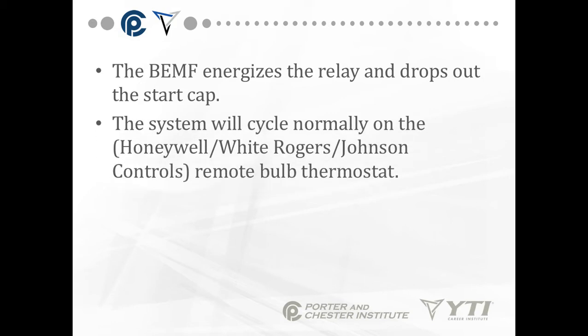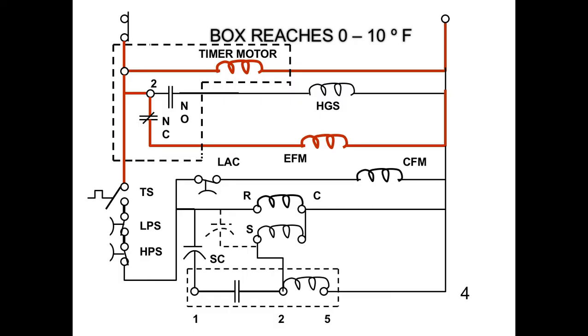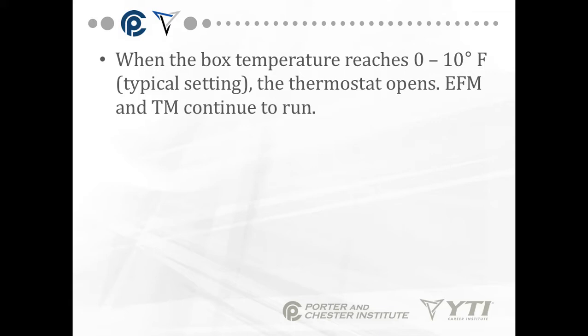So the back EMF energizes the relay and drops out the start cap. The system will cycle normally on the remote bulb thermostat, which is the TS over on the left side. Now the box temperature reaches 0, 10 degrees Fahrenheit, depending on what this is set at. The compressor, condenser fan, all drops out of the circuit. Now because it's a commercial box, it's a commercial system, that evaporator fan is going to continue to run. What that does is prevent hot spots in the cooling system. I don't want to have warm spots, I want it to be a uniform temperature. And how we do that is by keeping the evaporator fan running.